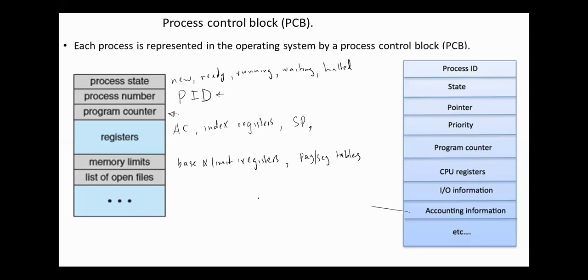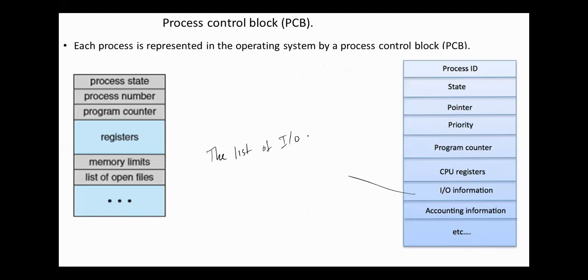Accounting information: the amount of CPU and real time used, time limits, account numbers, process numbers, and others. I/O information such as the list of I/O devices allocated to the process, a list of open files, and other I/O status information. Again, the process control block is maintained for a process and is deleted when the process terminates. Updating the contents of the process control block is a privilege to the operating system and is performed in the system mode.